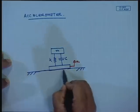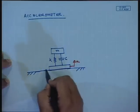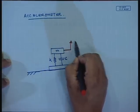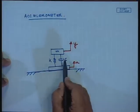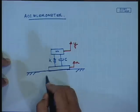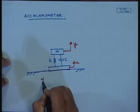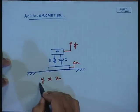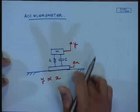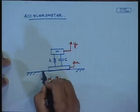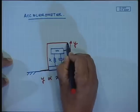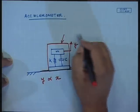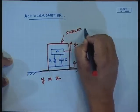Because of the motion x, this mass is going to have a motion y - dependent on the spring stiffness k and damping c. Indirectly, if I measure y, I can know what x is. This x is actually the vibration displacement, and this unit will be put in a nice housing - a sealed unit or casing.